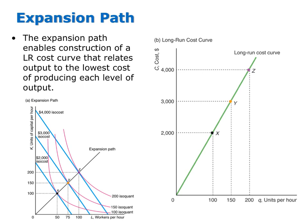Hopefully you can see that an expansion path is a lot like an income consumption curve. However, with an expansion path, what's driving the change is an increase in output, and we're tracing out the cost-minimizing bundles of inputs. The long-run cost curve, like the Engel curve, takes some information from the expansion path and graphs it on a new graph.